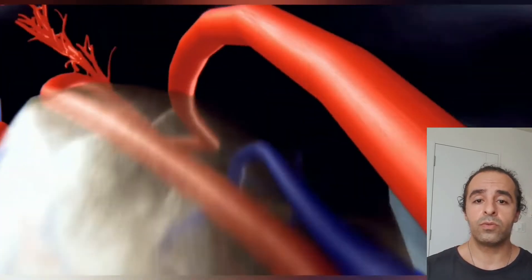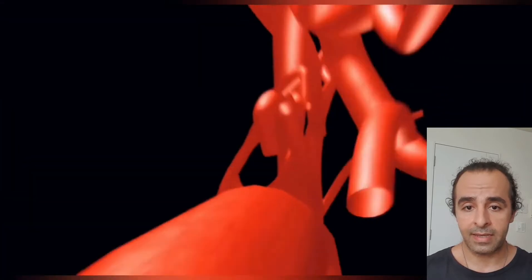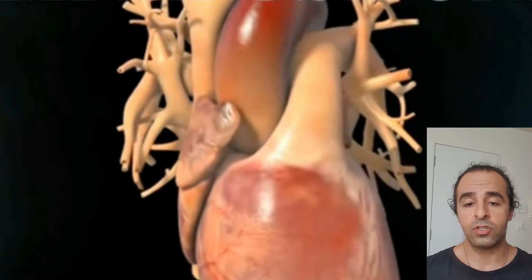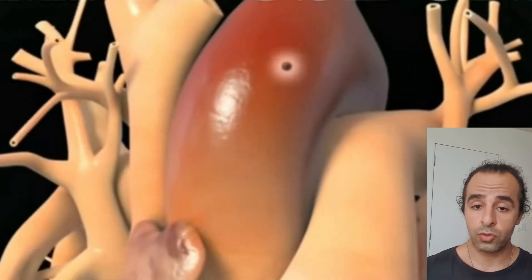The third one is blood clots. As you all know, the coronavirus can attack the red blood cells and cause them to clot. These clots can circulate inside your veins and reach the brain and cause a stroke.